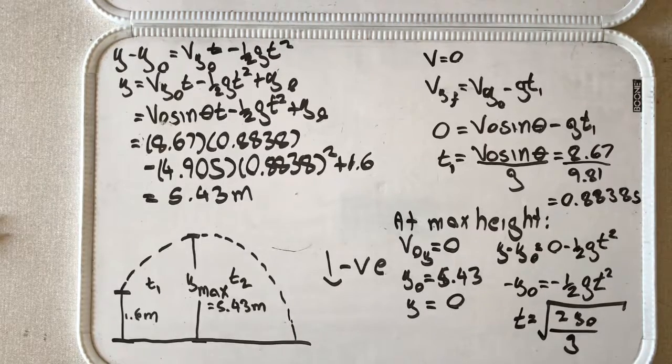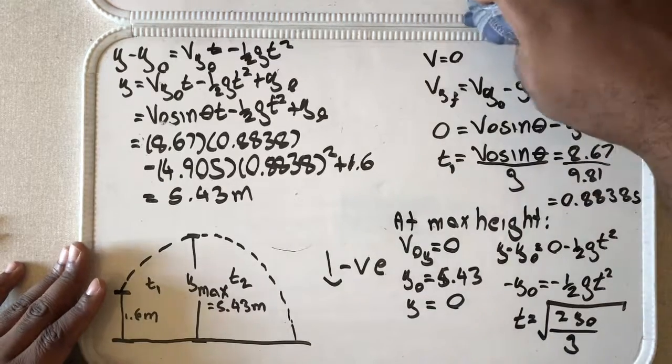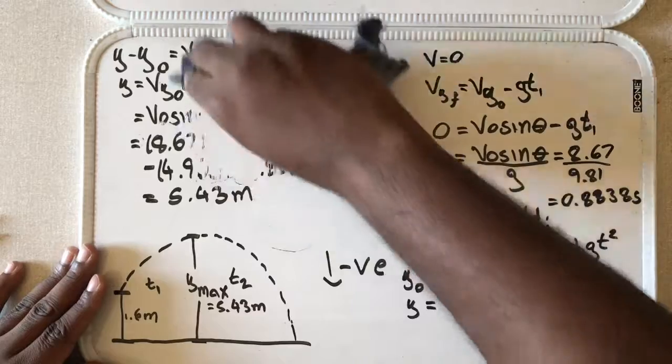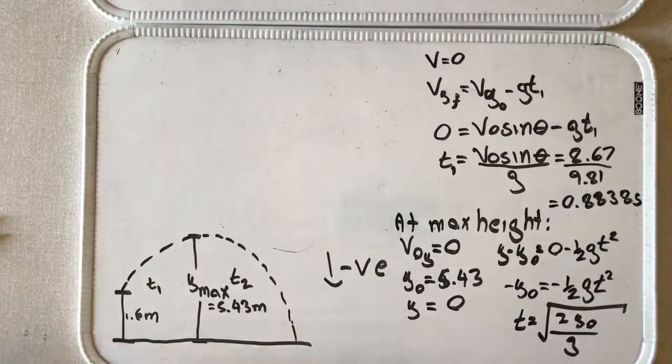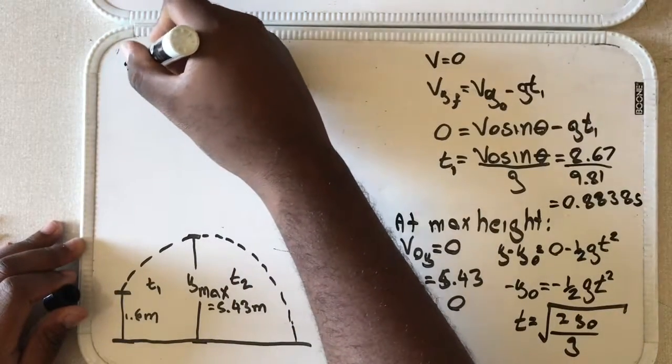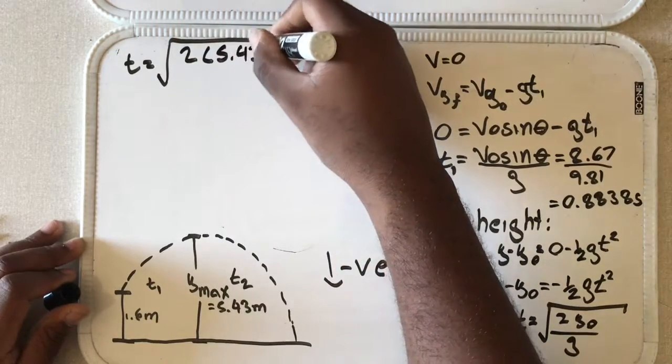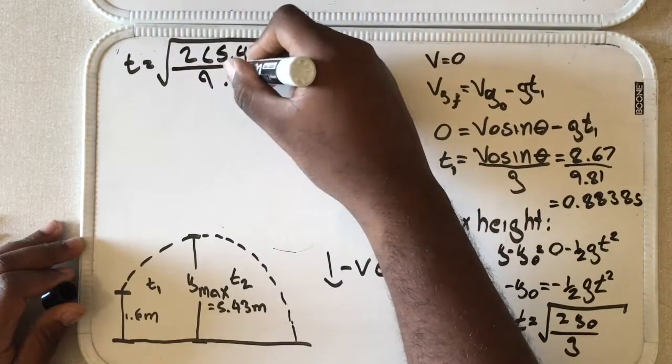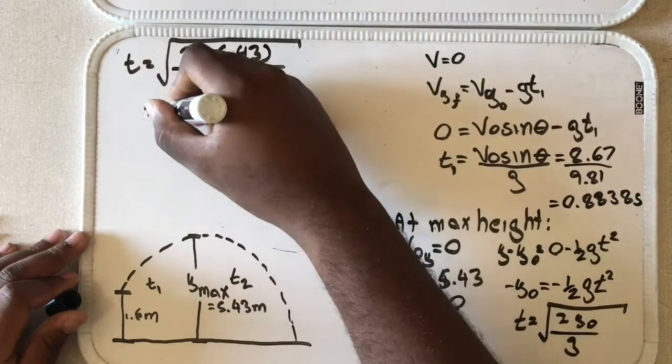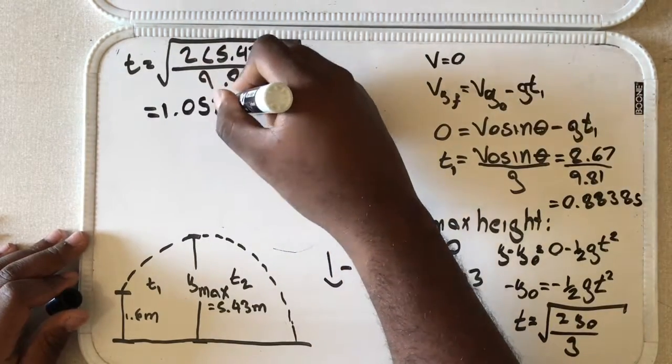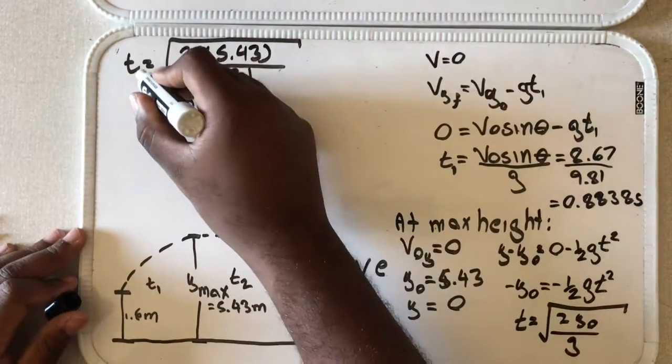So solving, t is just 2 y_0 divided by g. That's the time it takes for this object to get to the bottom or to the ground. So just to make some space, I will erase this. So now our time to fall from the maximum height is 2 times 5.43 divided by 9.81 and that gives us 1.0521 seconds, so this should actually be t2.